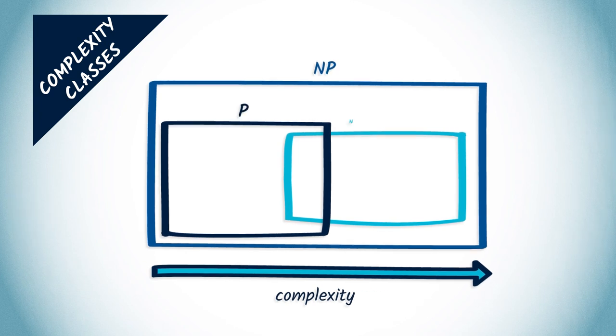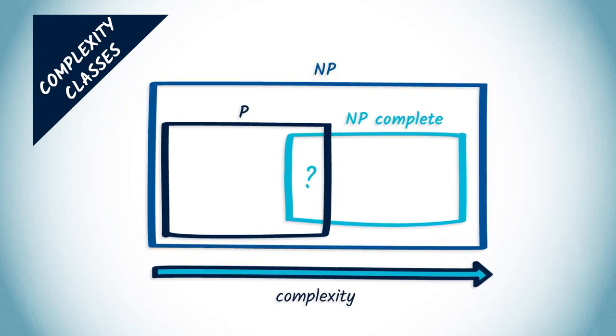Some problems are more difficult to solve than others, in the sense that they require more complex algorithms to be solved. As I will show you today, different complexity classes have been defined to describe how difficult it is to solve a problem. With this in mind, a problem is said to be polynomial if it can be solved by an algorithm whose complexity is asymptotically dominated by a polynomial.